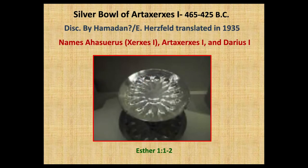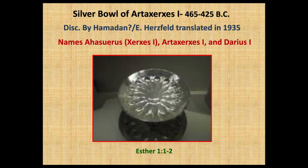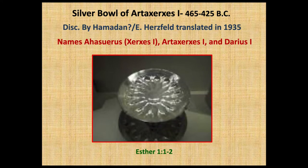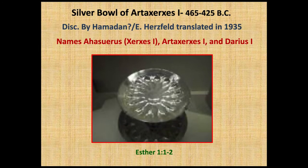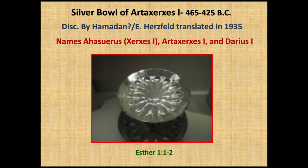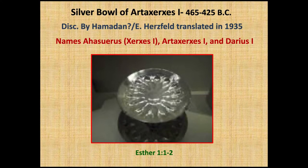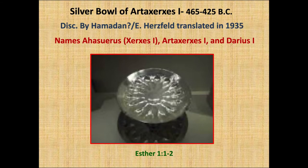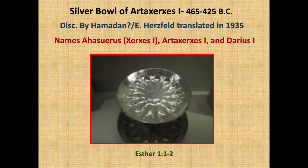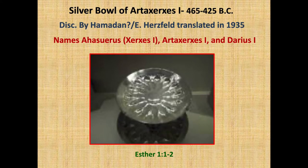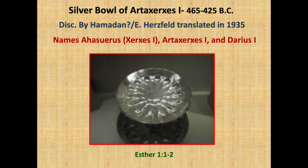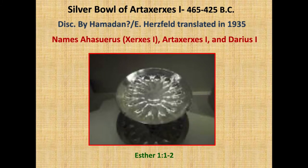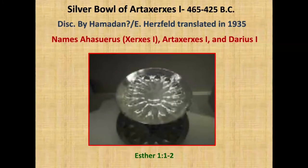One of the later kings of Persia, Artaxerxes I, who ruled from 465 to 425 BC — a silver bull with his name was found, bearing the names of Artaxerxes and Darius. Of course, in the book of Esther these kings are mentioned. An amazing find confirming these kings' names from Persia.